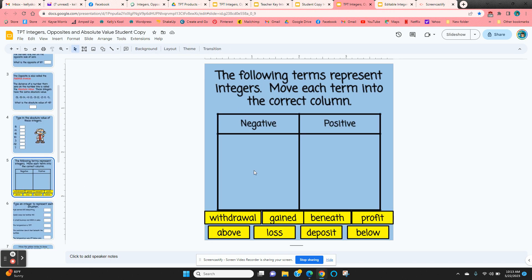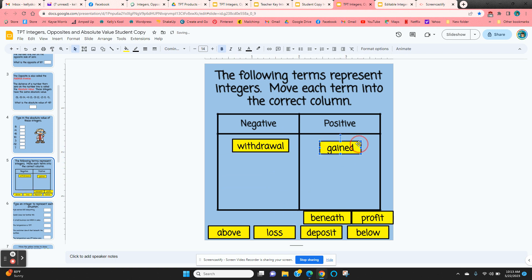Then they're given some different terms that they might use in word problems. And they need to determine whether those terms represent a negative or a positive. Now to move these into the correct column, they just click on the edge, click and hold, and then they can move it into whatever column they think applies.